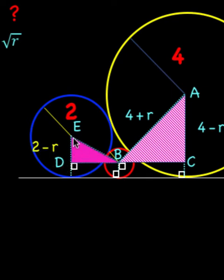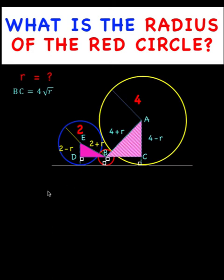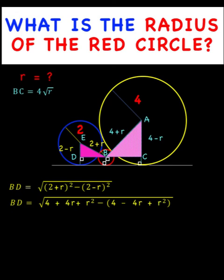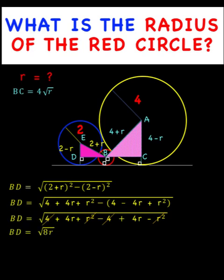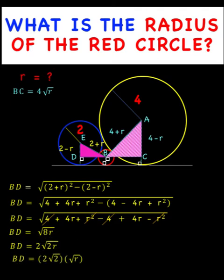The length of side ED is the radius of the blue circle minus the radius of the red circle, so 2 minus R. The hypotenuse EB equals the radius of the blue circle plus the radius of the red circle, so we have 2 plus R. From here we compute the length of side DB: BD equals the square root of the difference of the squares of the hypotenuse and one leg. Expanding the binomials and combining like terms, we get the square root of 8R for the length of BD, which simplifies to 2 times the square root of 2, times the square root of R.